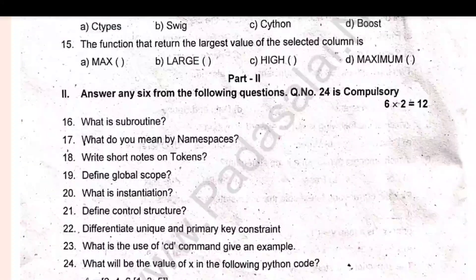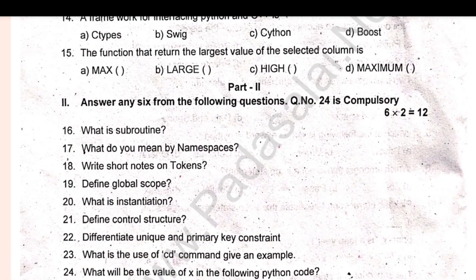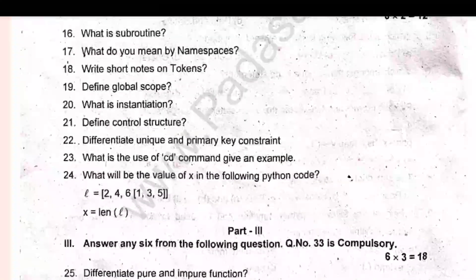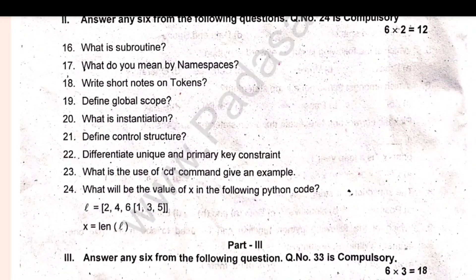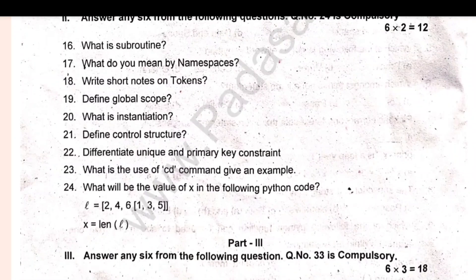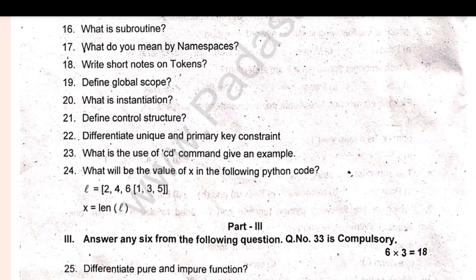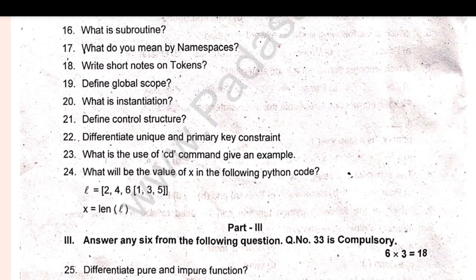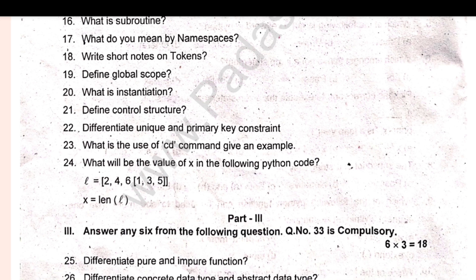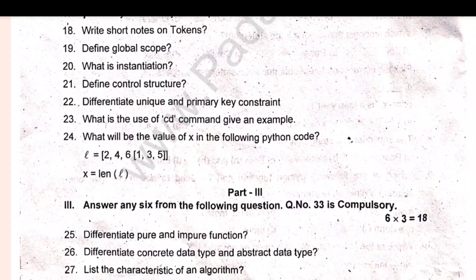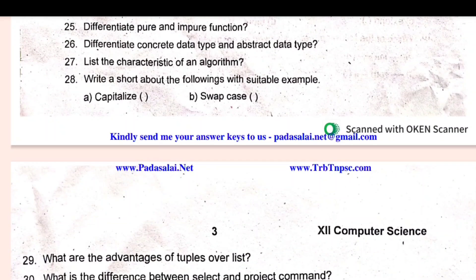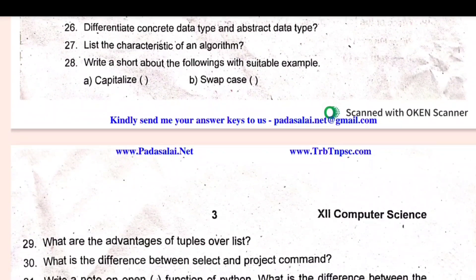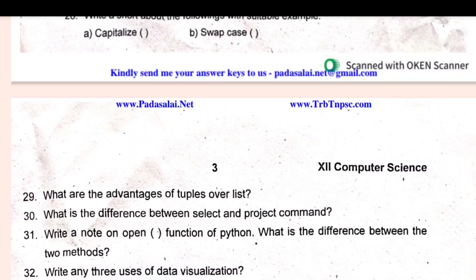The question of the 24th is compulsory. For Part 3, the 3-mark questions — question 33: Let's look at pure and impure functions. Differentiate concrete data type and abstract data type. Characteristics of an algorithm. Advantages of tuples over list. Question 33 is the same.